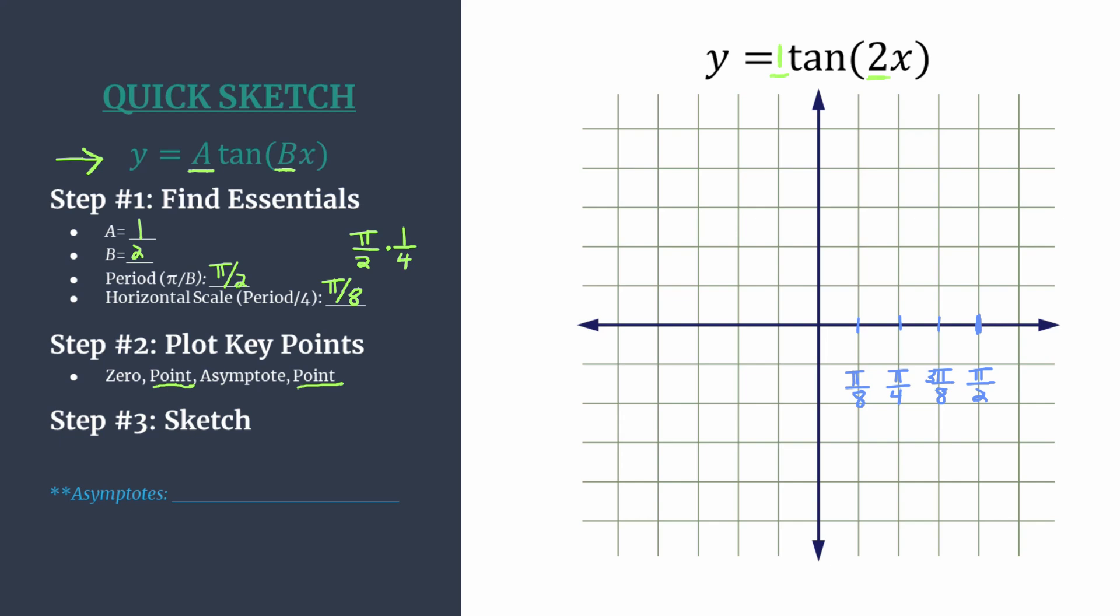All right then for our vertical axis we're just going to go up 1 and down 1. We're really looking at the value of A here and since it's 1 this will be sufficient. All right so now we're ready for step 2, we're going to plot our key points pattern. So for a basic tangent graph this starts at the origin with a 0 or an x-intercept. Then you'll have your upper curve shaping point, then an asymptote, then your lower curve shaping point.